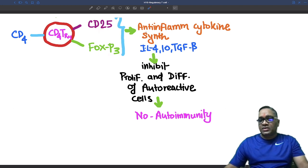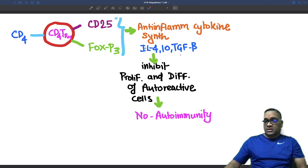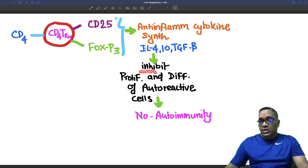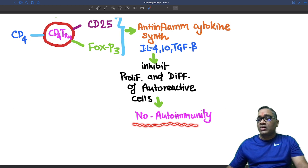They synthesize anti-inflammatory cytokines like IL-4, IL-10, and TGF-beta. What is the function of these cytokines? They inhibit proliferation and differentiation of autoreactive cells, and by this method, they prevent autoimmunity.